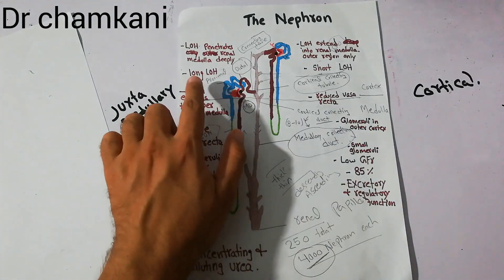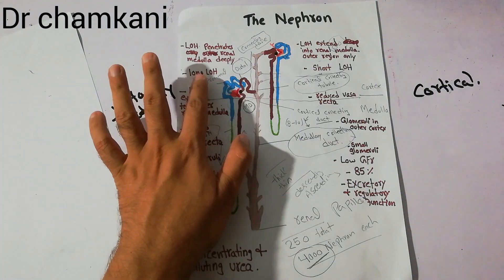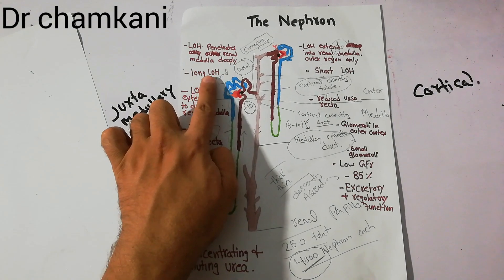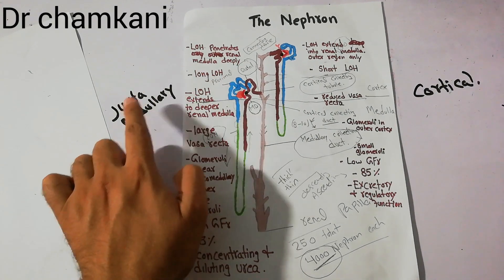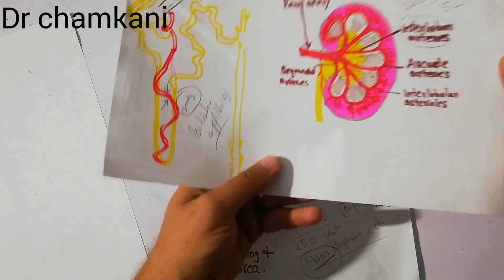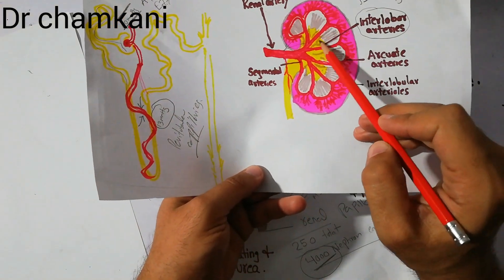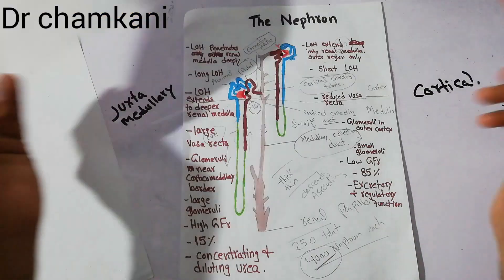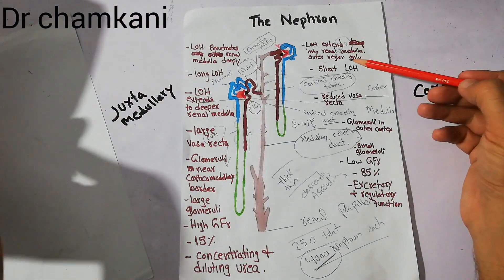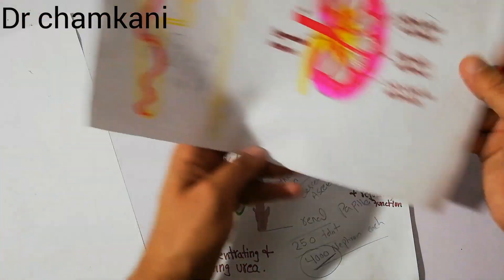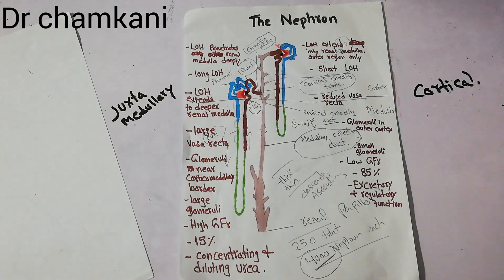Another difference is the length of the loop of Henle. The juxtamedullary nephrons have a very long loop of Henle while the cortical nephrons have a shorter loop of Henle.